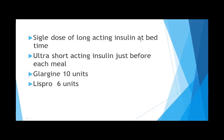The first regime uses a mixture of short-acting Regular insulin and intermediate-acting NPH. The second regime involves a single dose of long-acting insulin at bedtime — with no relation to meals — and ultra-short-acting insulin before each meal. We give glargine 10 units starting dose at bedtime, and lispro — an ultra-short-acting insulin — at a starting dose of 6 units before each meal.